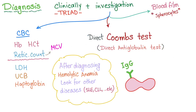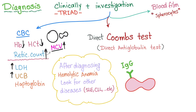To diagnose autoimmune hemolysis: the clinical triad plus investigations. CBC will show low hemoglobin and low hematocrit. Reticulocyte count will be high because it's a hemolysis, and this usually leads to a normal-to-high MCV because reticulocytes are bigger than red blood cells. LDH will be high, unconjugated bilirubin will be high, and haptoglobin will be low.